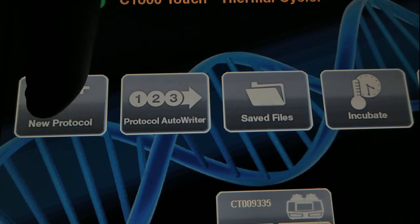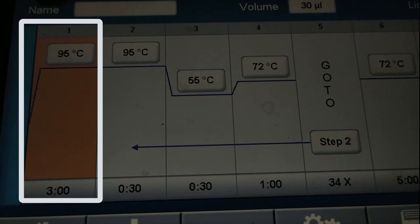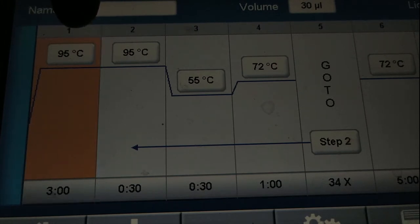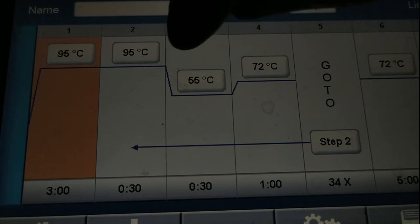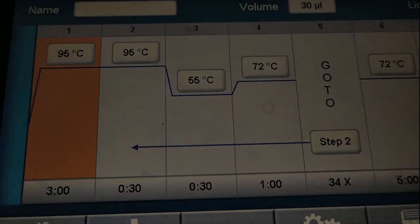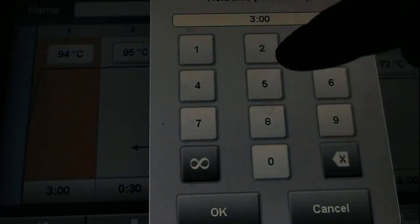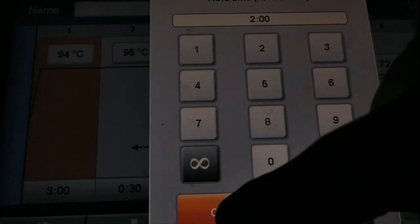In our case we are going to start a new protocol. And here we have the first column saying the initial denaturation at temperature 95 degrees Celsius for 3 minutes. Now we need to change it to 94 Celsius degrees and 2 minutes. So to do so you just press on the 95 and set 94. Then press OK. Press on the time and change it to 2 minutes. Then press OK.